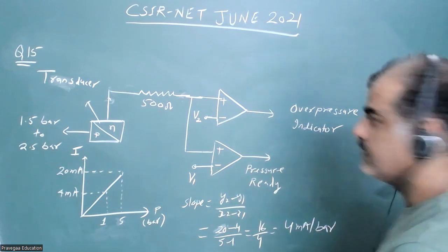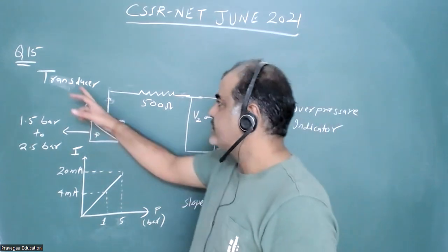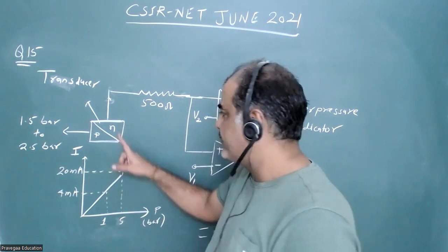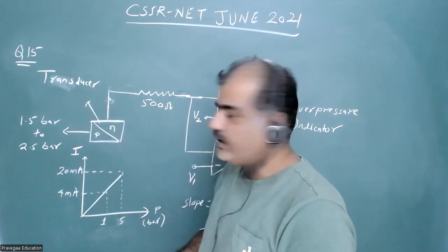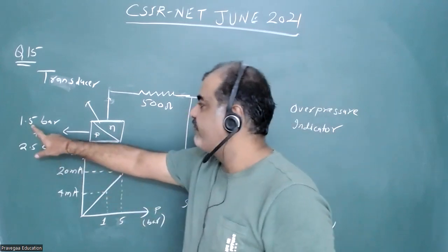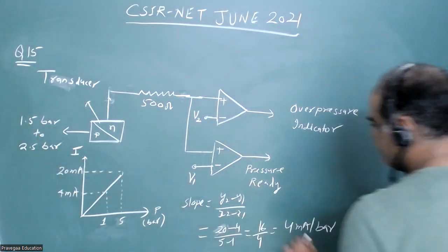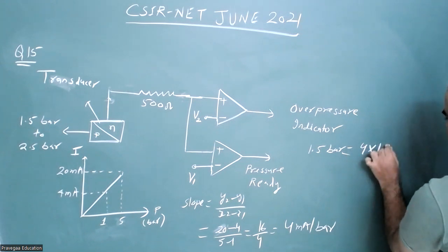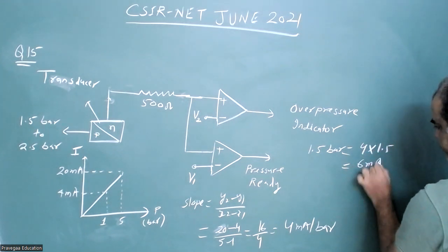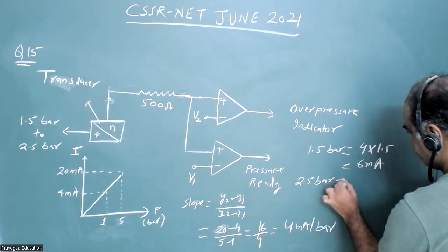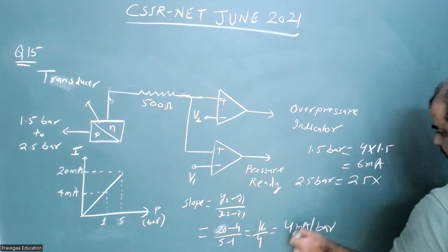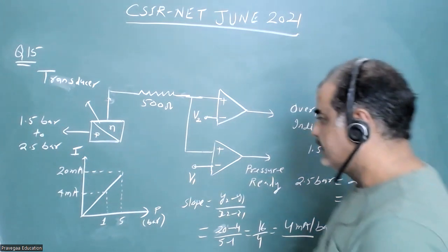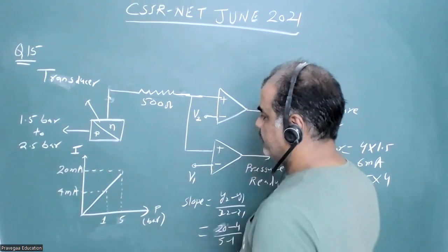The output of the transducer is 4 milliampere per bar, and this output is linear. So whatever pressure is there, we get a linear current output. For 1.5 bar, the current is 4 × 1.5 = 6 milliampere. Similarly, for 2.5 bar, the current is 4 × 2.5 = 10 milliampere.